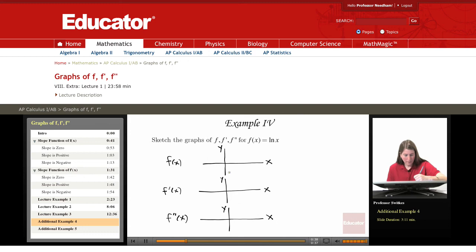So ln(x) has a graph that looks like this. It has a vertical asymptote at x equals zero and it's undefined for negative values of x.